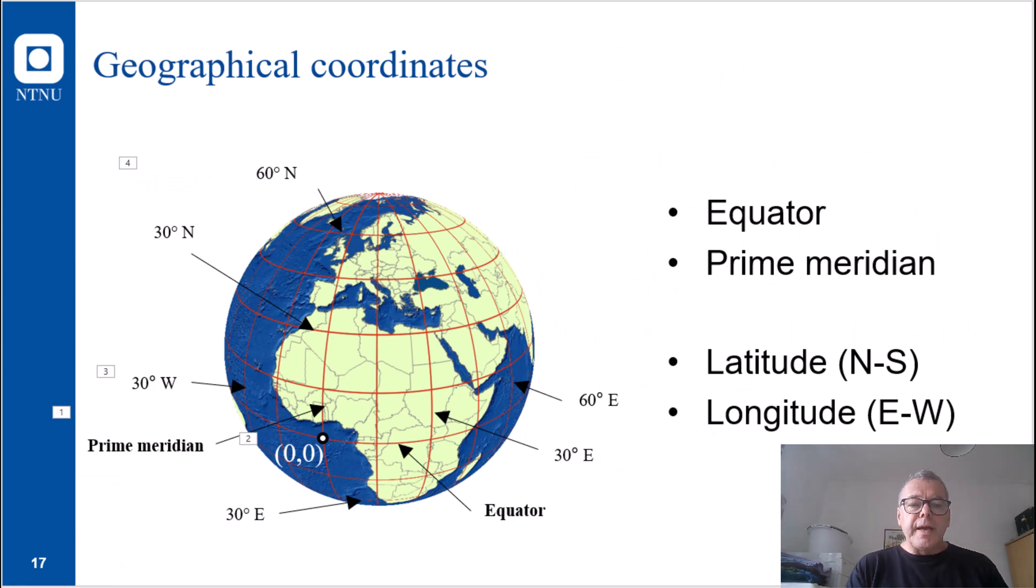Geographical coordinates is the coordinate system used for the sphere or the ellipsoid. Some essential concepts are the equator and the prime meridian. This defines the location of the origin. So latitude, the coordinates which gives the northern or southern position, and the longitude, which gives the eastern or western position, all relates then to the origins.